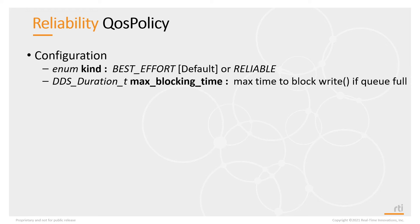The reliability QoS policy is configured with two parameters: kind and max blocking time. Reliability kind can be set to either best effort or reliable. By default, reliability is best effort, which means reliability is not turned on. Max blocking time determines the maximum amount of time a data writer write call will block if the send queue is full.